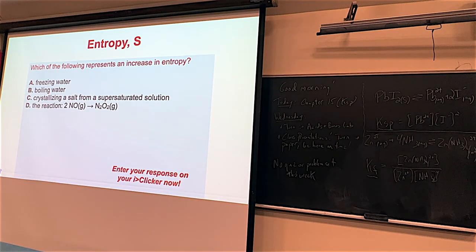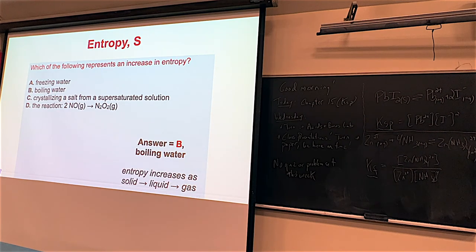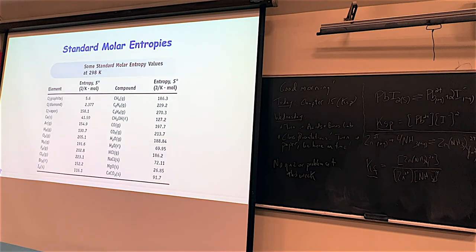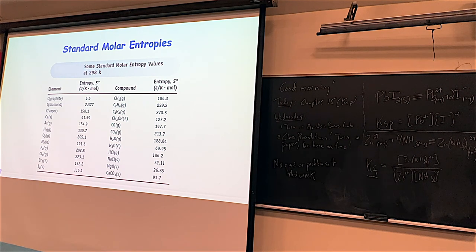Boiling water — turning a liquid into a gas — represents the biggest change in entropy. Going from a liquid to a gas is the largest entropy increase. We'll continue with this topic next Monday. There's a table of entropy values you can use; none of them are zero because none are perfect crystals of pure elements at zero Kelvin. Class presentations are on Wednesday.